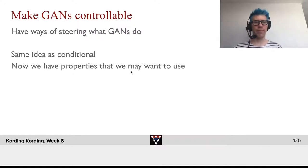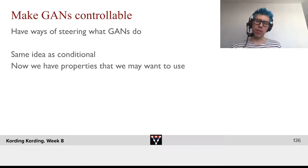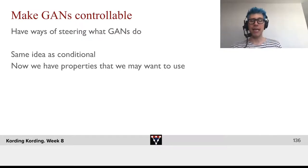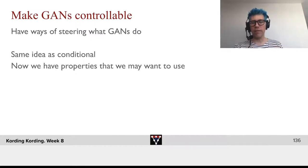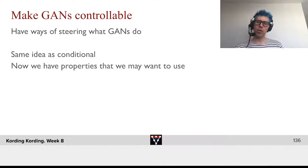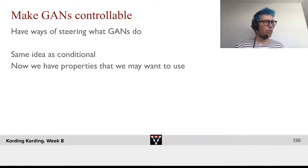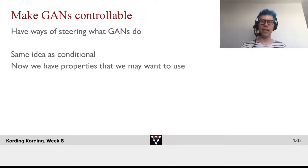Let's make GANs controllable. What we saw before is that we can use conditional GANs to basically say I want a certain object type, or I want a certain breed of cat. But now, when I talk about controllable, I would like things like this: can you rotate the cat's head to the right? Or can you make the cat bigger? Can you make the cat older? Things like that.